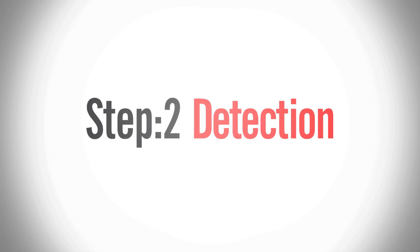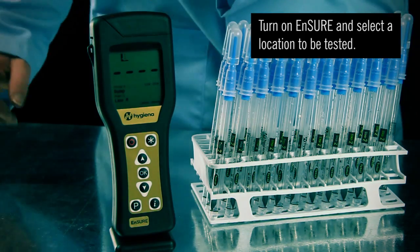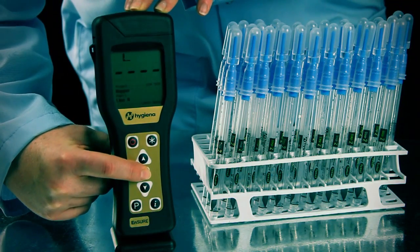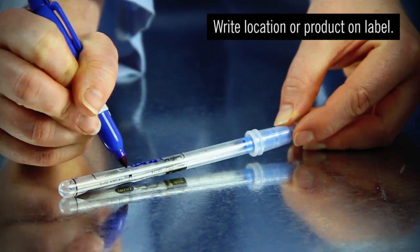The second step is detection. Allow the detection device to acclimate to room temperature before testing begins. Turn on the Ensure luminometer. If you program locations, select the location to be tested. Write the location or product on the swab tube label for easy identification.